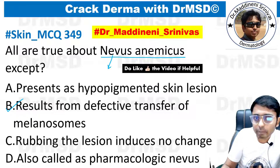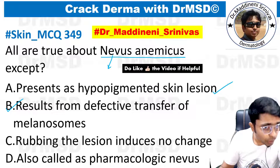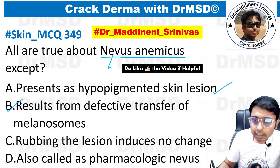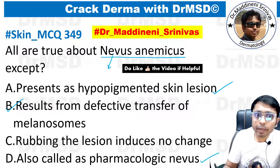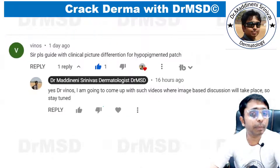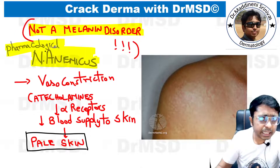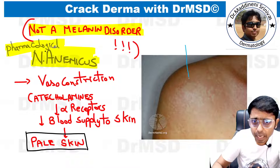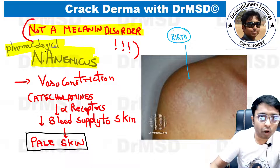Nevus Anemicus presents as a hypopigmented skin lesion — this is absolutely correct. It is also called a pharmacologic nevus. The reason for this name is that there is a hypopigmented skin lesion in these patients, as you can see here.